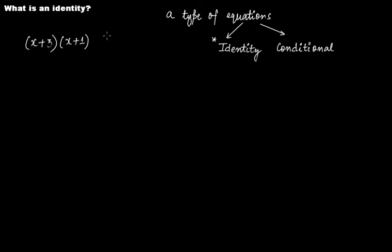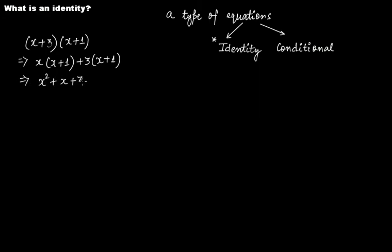If you simplify this expression, you get x(x + 1) + 3(x + 1), and then this becomes x² + x + 3x + 3. This x and this 3x are two like terms; if you add them together you get x² + 4x + 3.